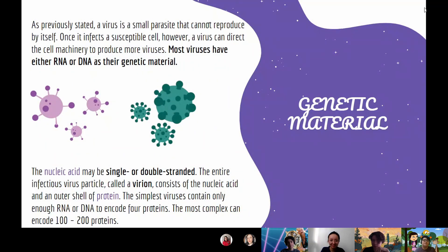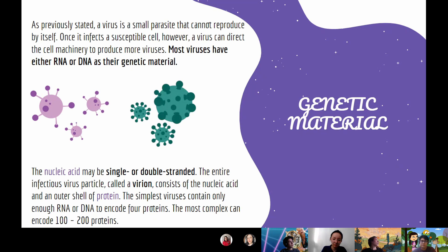As previously stated, a virus is a small parasite that cannot reproduce by itself. Once it infects a susceptible cell, however, a virus can direct the cell machinery to produce more viruses. Most viruses have either RNA or DNA as genetic material. As they are not alive, their only purpose is to infect other cells — specifically to release their RNA and DNA so that the cells produce more viruses. The nucleic acid may be single or double stranded.